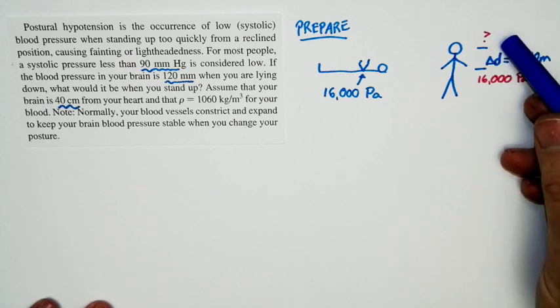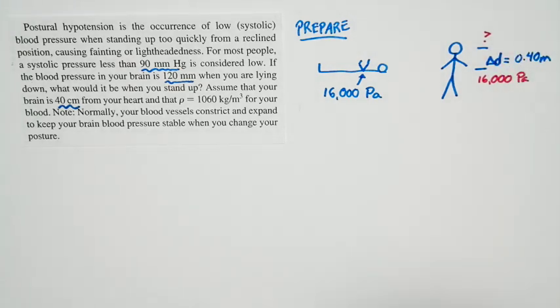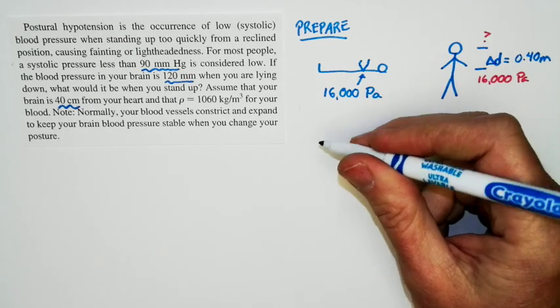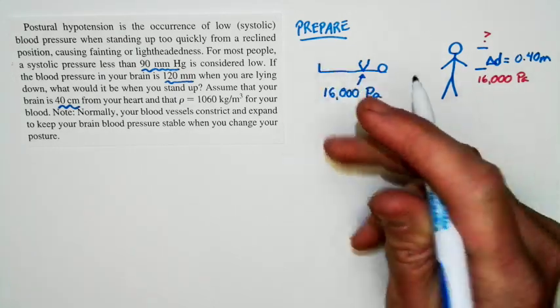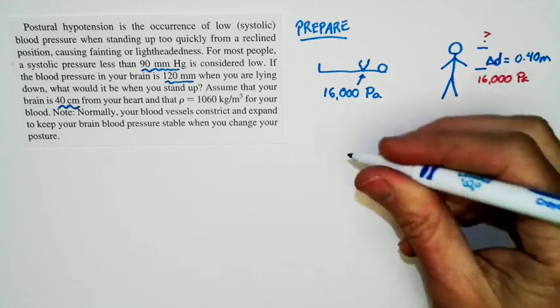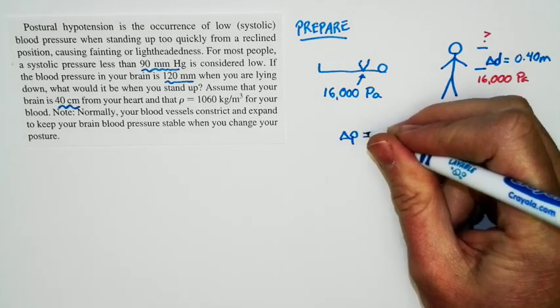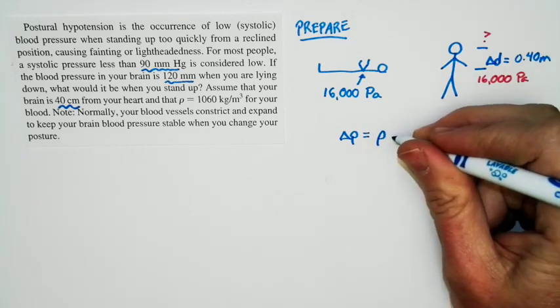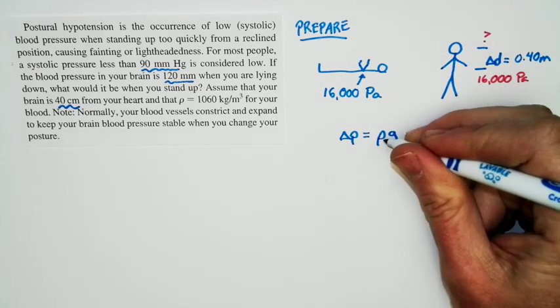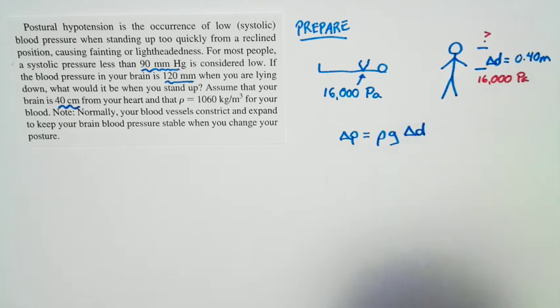Pressure at the heart, pressure at the head, and we're looking for the difference in pressure. Well, this is basically a question about difference in pressure in a fluid column, because your circulatory system is a column of fluids. And we know the difference in pressure at different depths in a fluid column is just given by this relationship right here. The difference in pressure is rho times g times delta d.